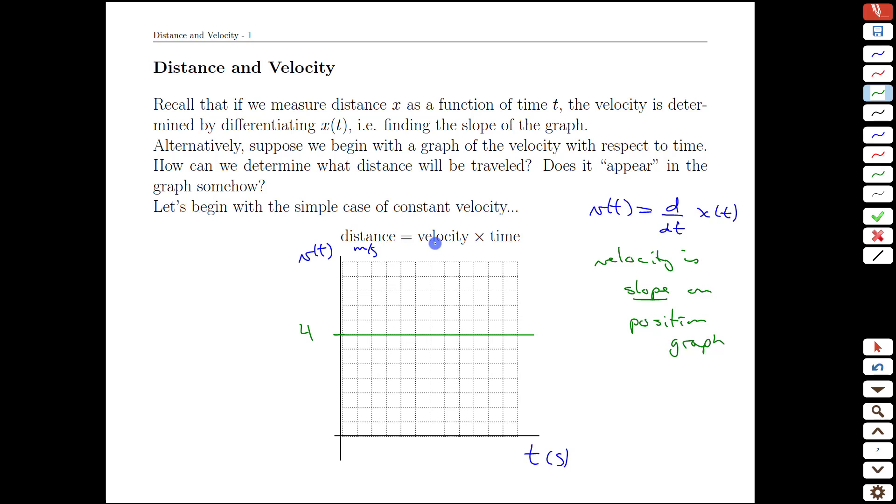However, we also know how to calculate the distance when the velocity is constant. Distance traveled is going to be velocity times time. So imagine we travel for let's say eight seconds. We can do the side calculation that the distance is going to equal four meters per second times the eight seconds, and we know that that's going to be 32 meters as the distance traveled.